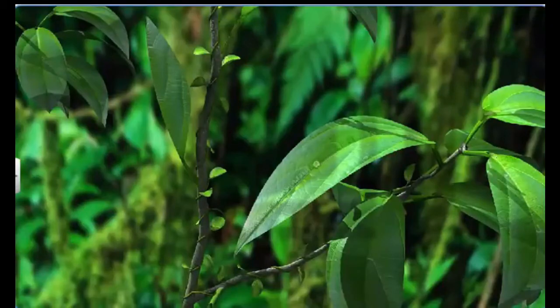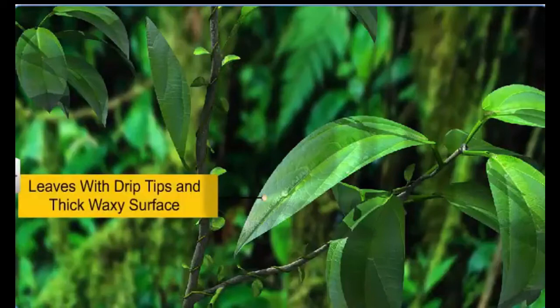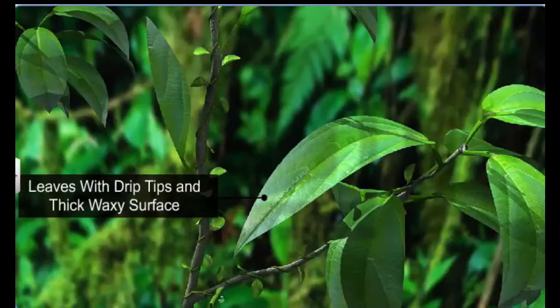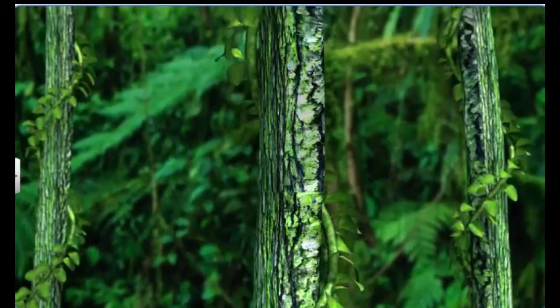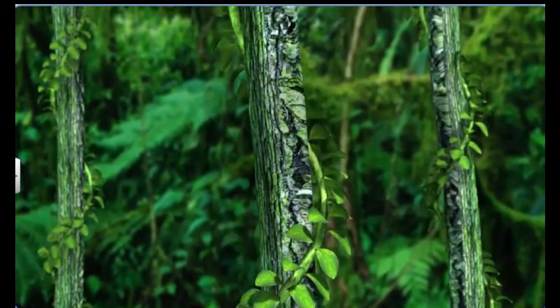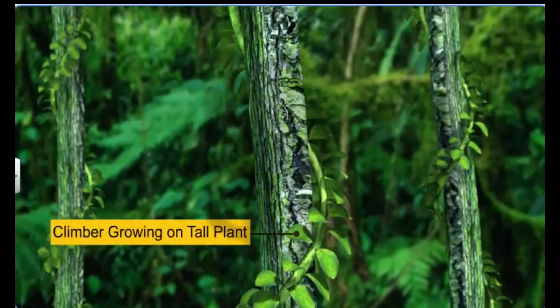On the other hand, plants growing in rainforests have developed special mechanisms such as leaves with drip tips and thick waxy surfaces which allow water to run off. Moreover, some climbers grow on tall plants to receive sunlight.